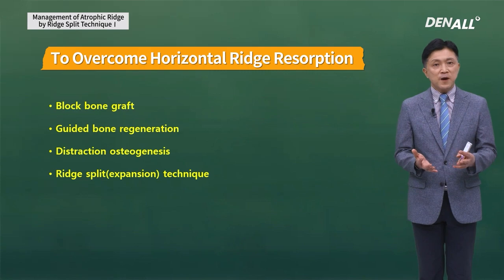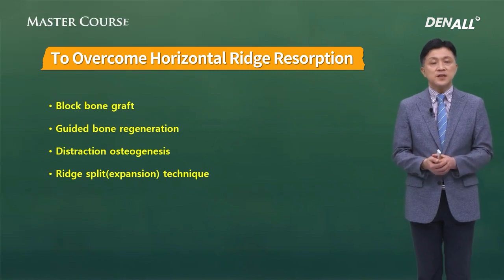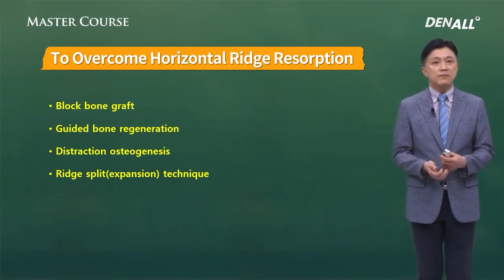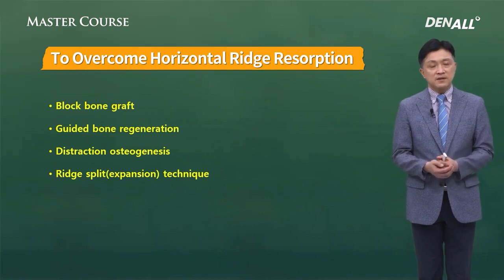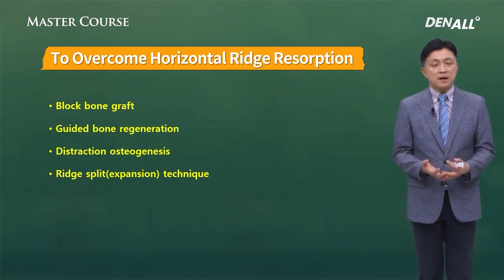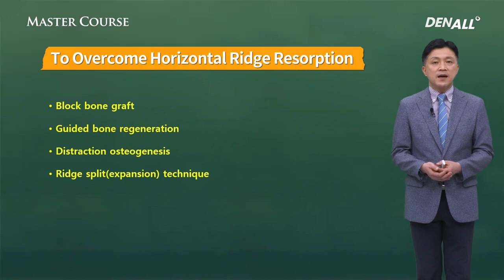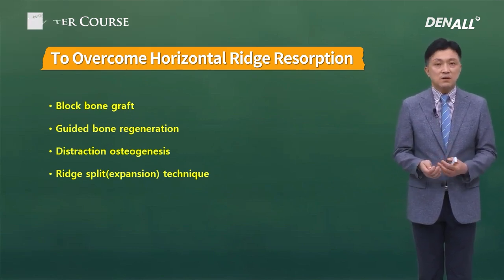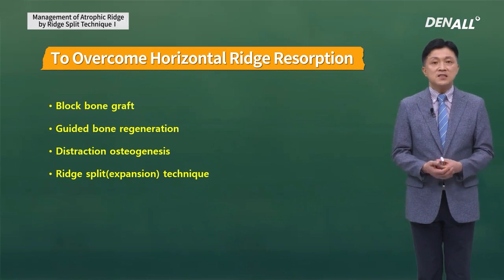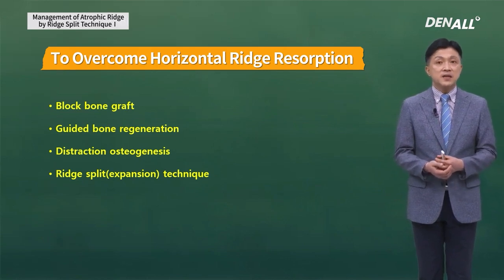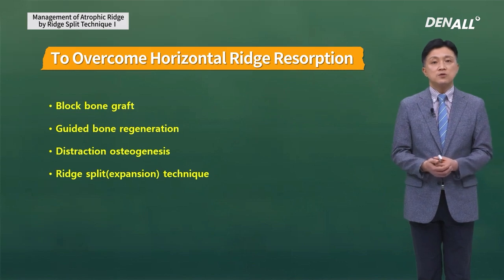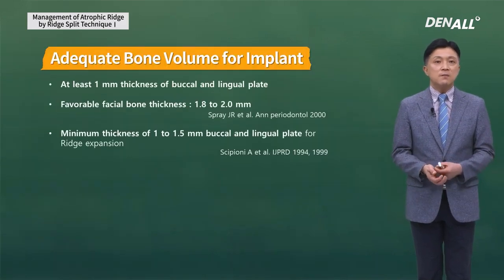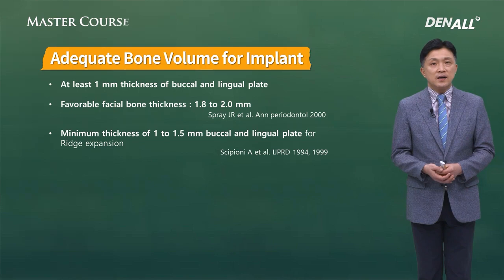In order to overcome horizontal alveolar ridge resorption, there are many methods available: block bone graft, guided bone regeneration. Distraction osteogenesis is not used commonly but can also be used to increase bone amount. Ridge split or expansion technique can also be utilized to increase horizontal bone amount.